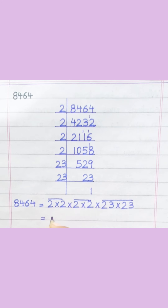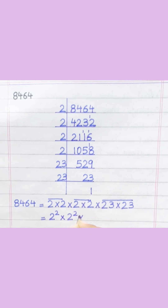Equal two squared multiply two squared multiply twenty-three squared.